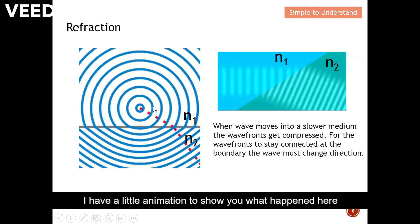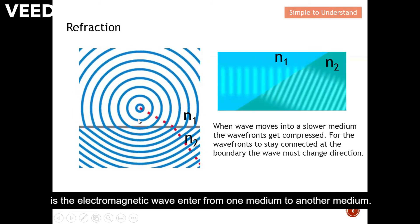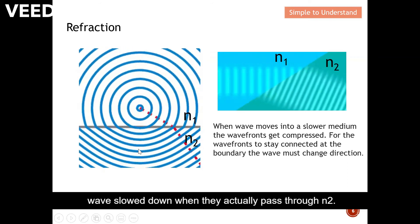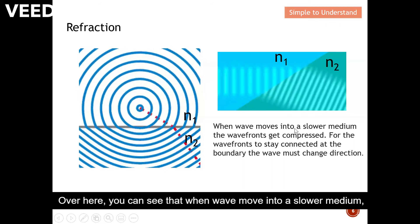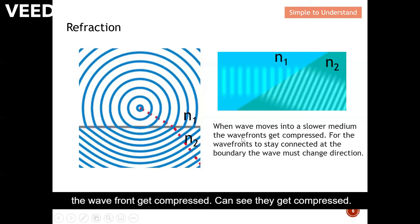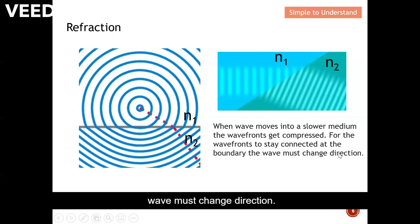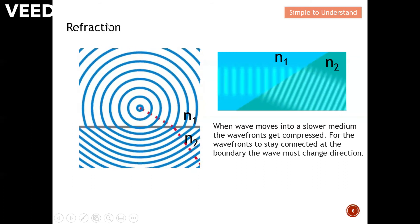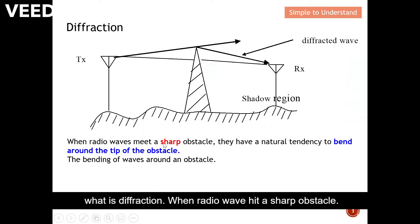Here is a little animation to show what happens. The electromagnetic wave enters from one medium to another medium, and we can see the speed of the electromagnetic wave slows down as it passes through the second medium. You can see the wavefront gets compressed. For the wavefront to stay connected at the boundary, the wave must change direction. So now you have some idea of what refraction is.